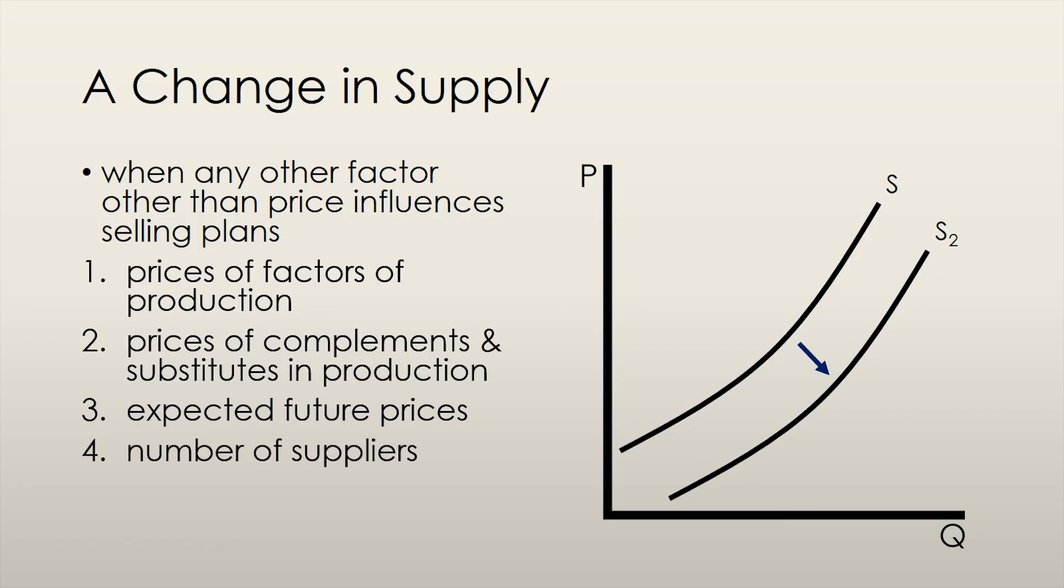The number of suppliers should also be quite intuitive. If we have more firms producing the good, then regardless of what the price is, we have a greater quantity produced. Thus, as the number of suppliers increases, so does the supply.